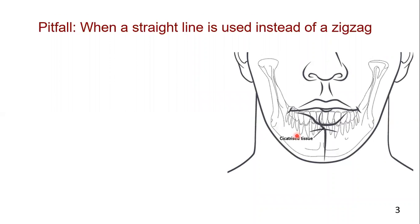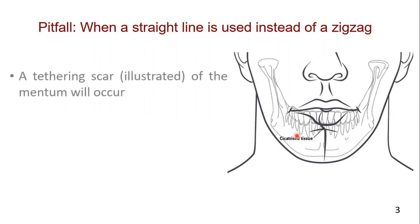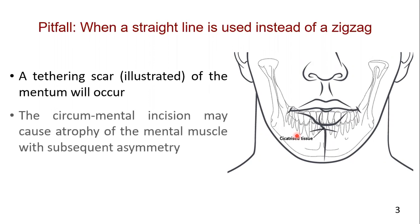When a straight line is used instead of a zigzag, a tethering scar of the mandible will occur. Occasionally, the circummental incision may cause atrophy of the mental muscle with subsequent asymmetry.